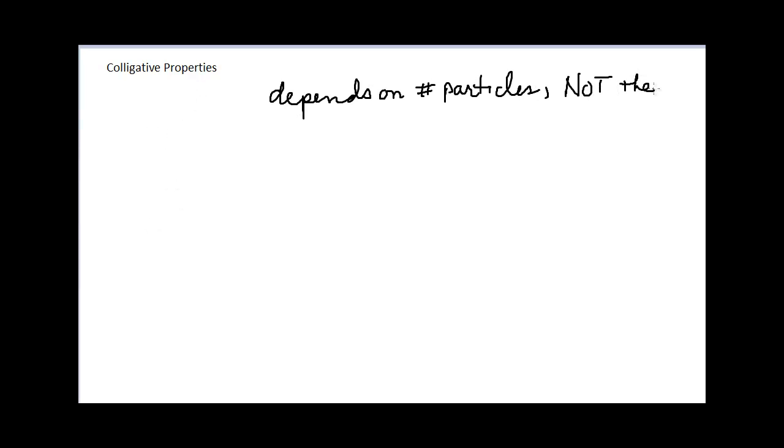We're wrapping up the information on mixtures in this chapter. We're going to talk about colligative properties. A colligative property is the property of a mixture whose value depends on the relative number of solute and solvent particles, and not on the identity of the particles. Since we're depending on the number of particles, we're looking at concentration units in terms of the number of particles, like moles of a substance.